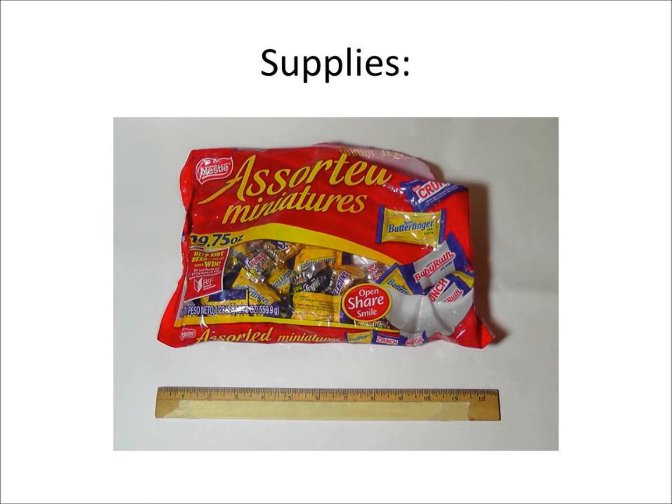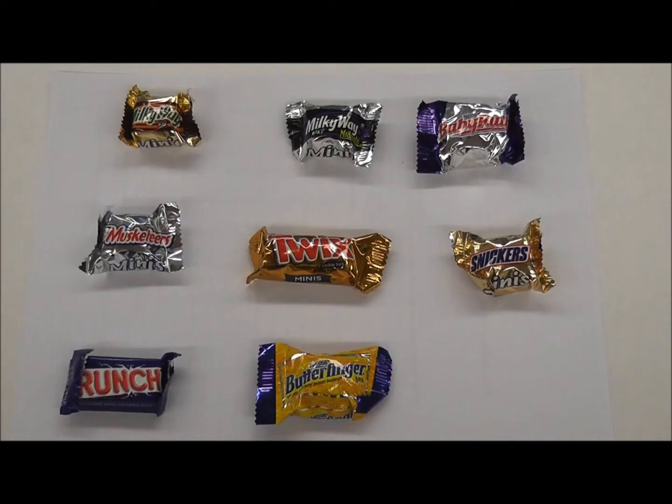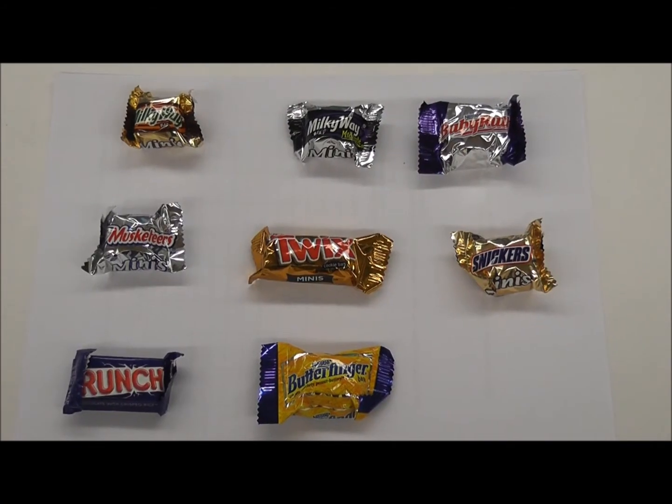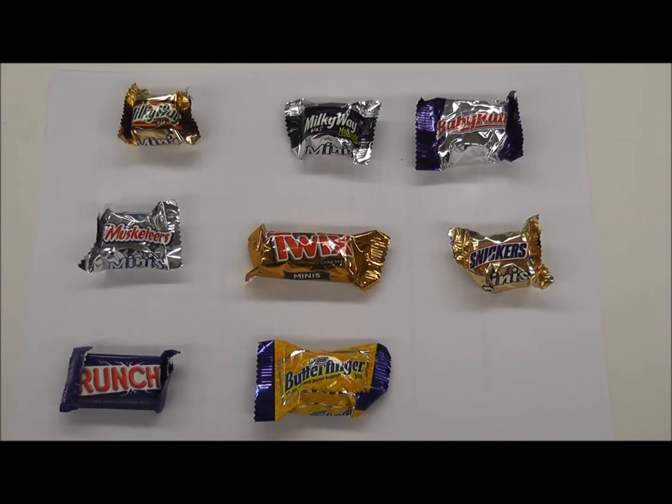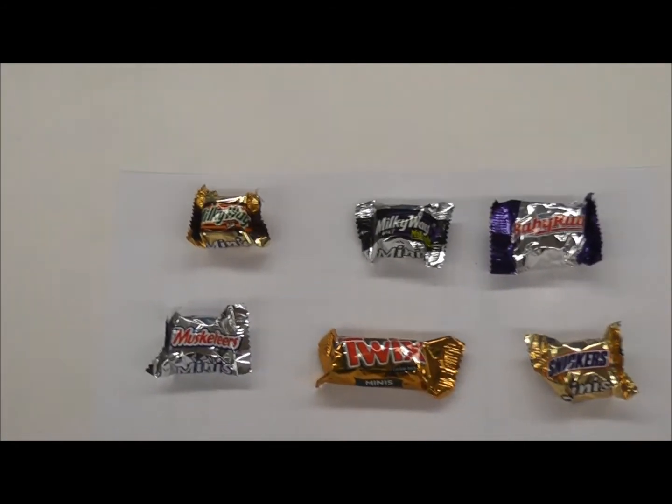The supplies needed for this lesson are 7-8 different types of candy, white computer paper, and rulers. For this example, we used a Mars Minis candy bar mix and a Nestle candy variety pack.